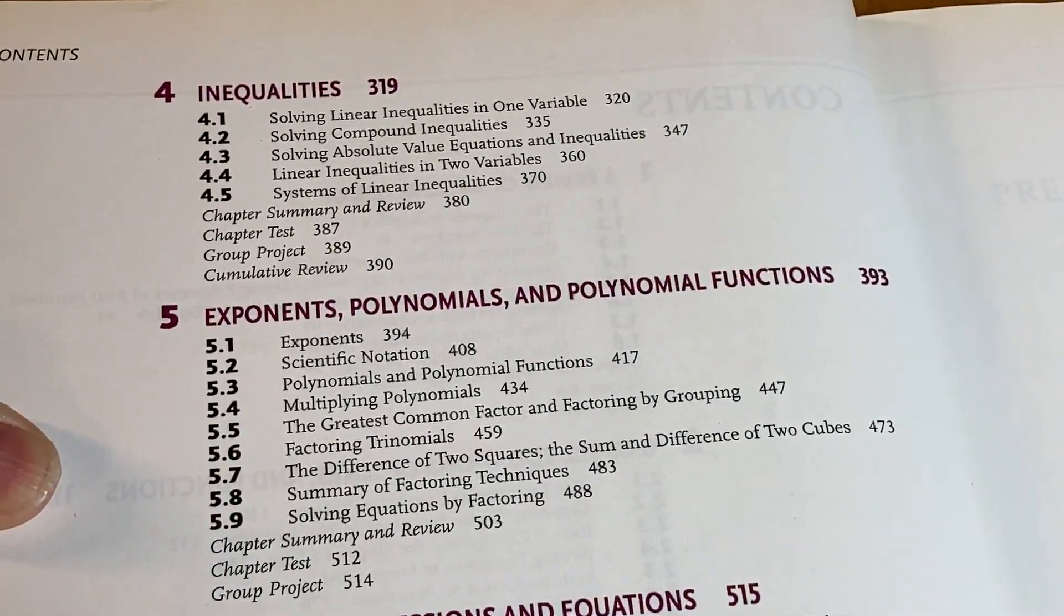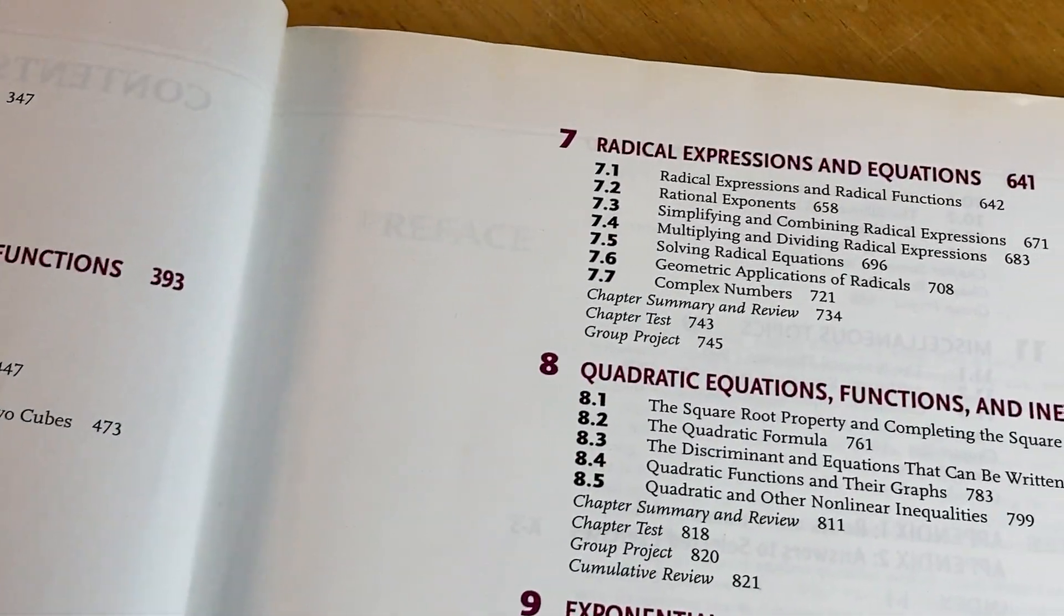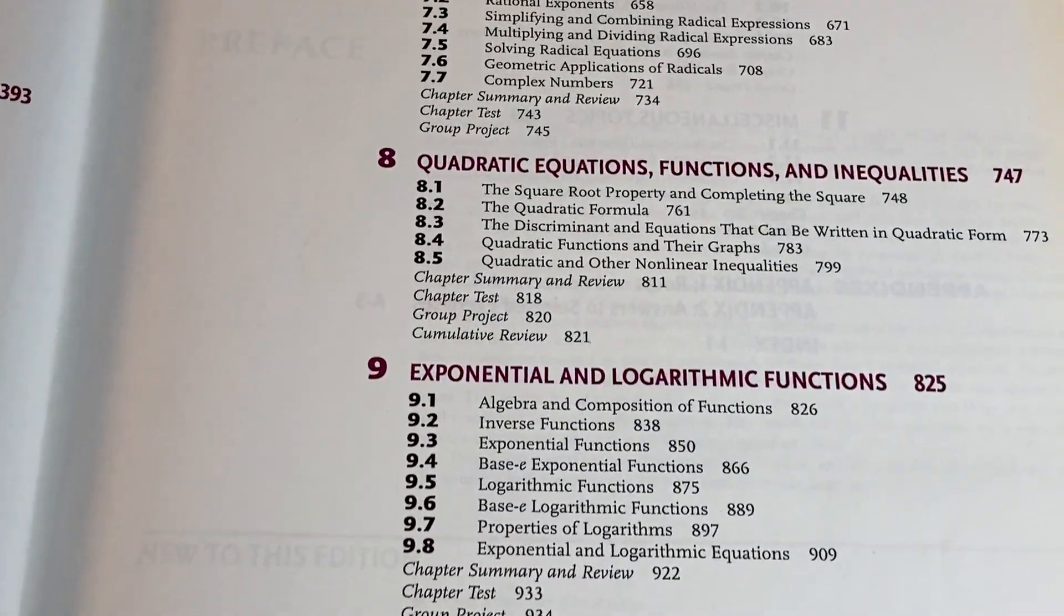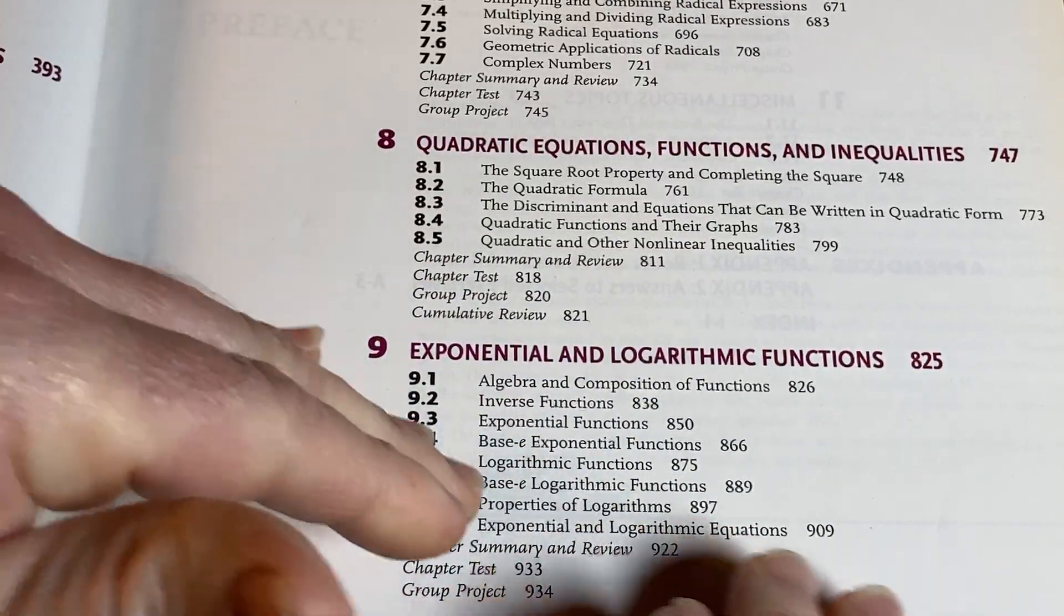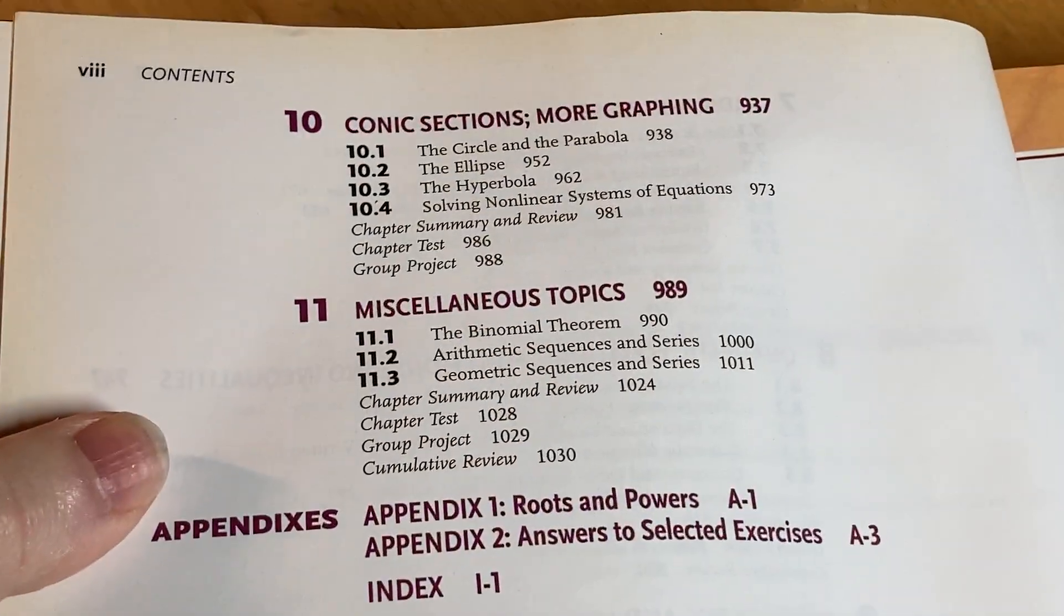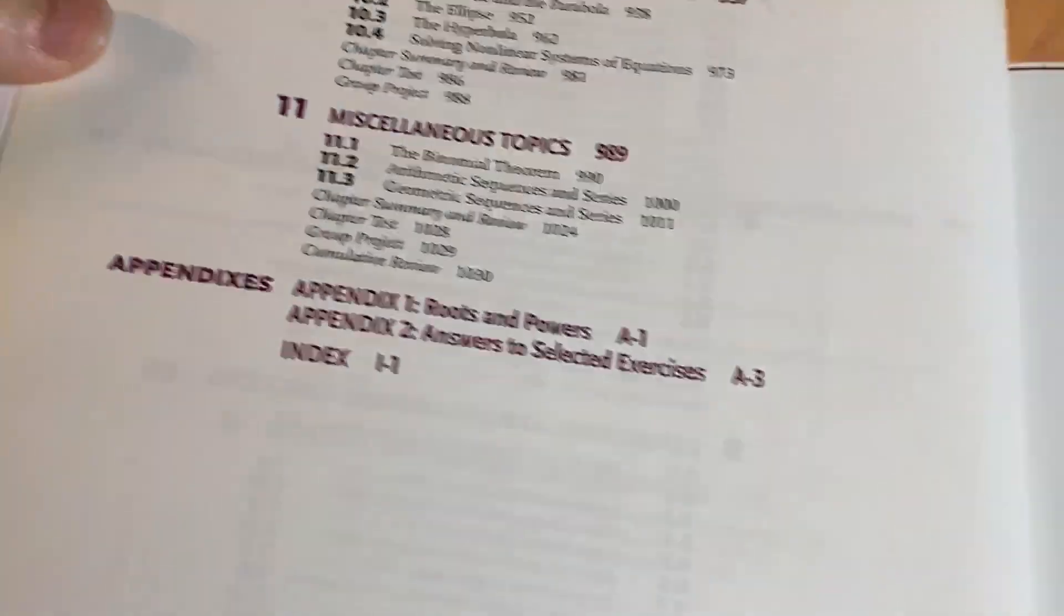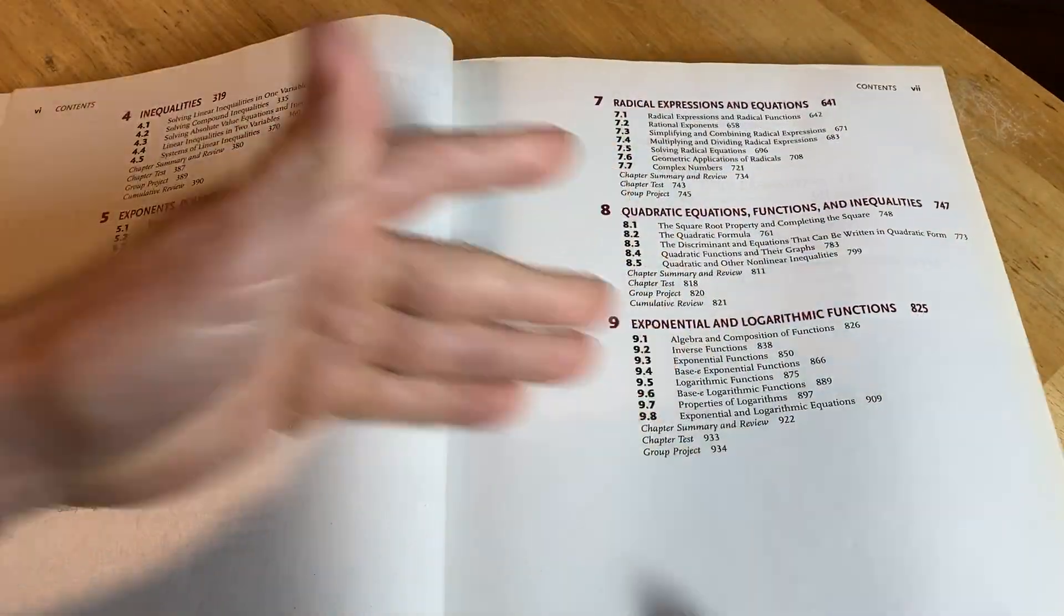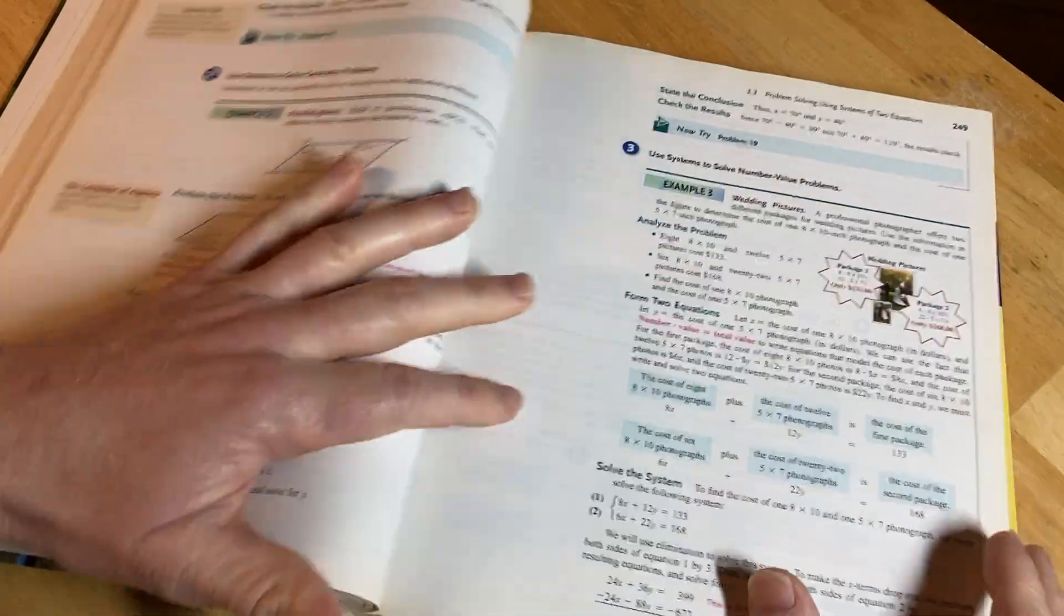Inequalities, exponents, polynomials, and polynomial functions, rational expressions and equations. And over here we have some more topics, radical expressions and equations. And then quadratic equations, functions, and inequalities. And then this here, logarithmic functions. This is usually not covered in intermediate algebra. This is like a college algebra topic. So you have some math topics. And one of the best things, a couple more things here. Conic sections, and then some other topics here. These are usually covered in a pre-calc class. So this book, while it's an intermediate algebra book, does contain topics that you would see in college algebra and in pre-calculus, which make it a really good choice for if you're going to spend money on something.